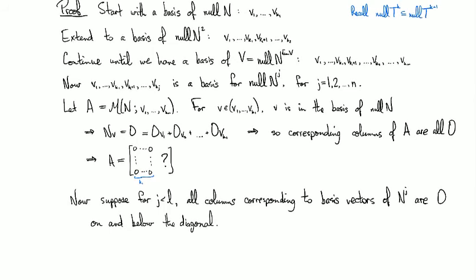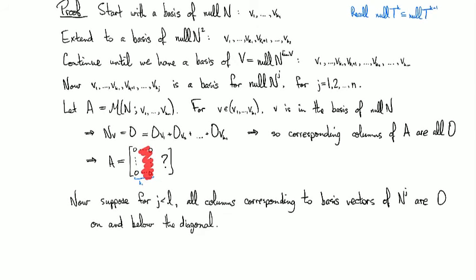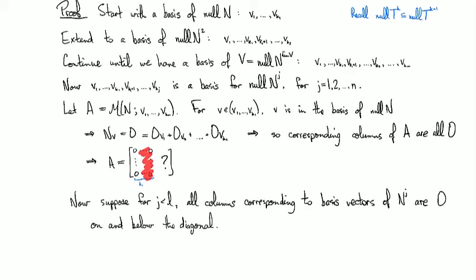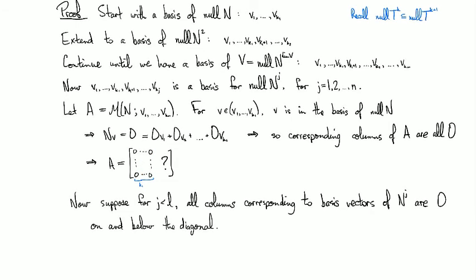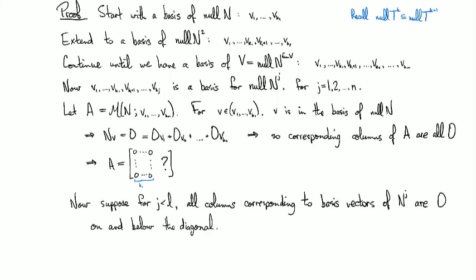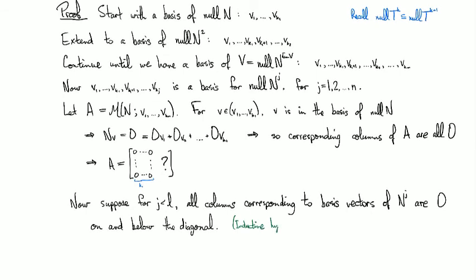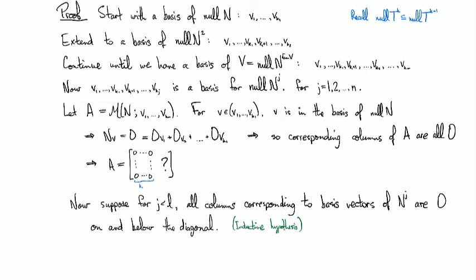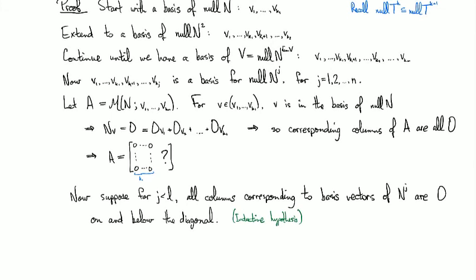By the way, remember K1 could be equal to one, right? So it could be that none of this stuff is actually equal here. There's just one column of zeros, and then in the next row we're already on to the part of the basis of N squared, right? Okay, but it's definitely enough. Okay, so this is our inductive hypothesis. And so we're going to use this to show that for the columns corresponding to the Lth, so N to the L, it also is going to be the entries are going to be zero on and below the diagonal.